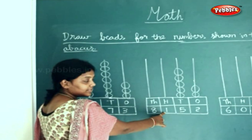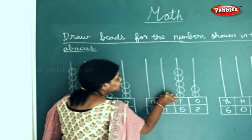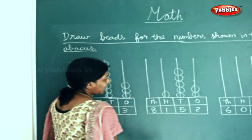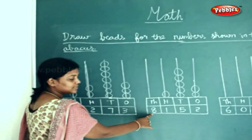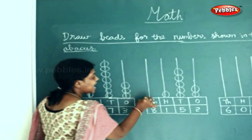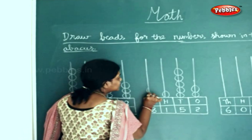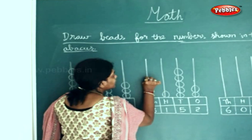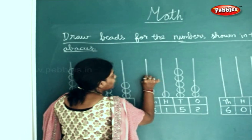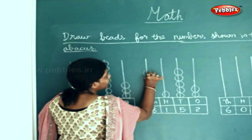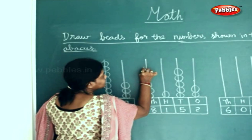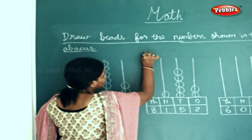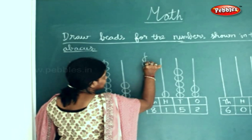How many beads in the 100s place? Just 1. How many in the 1000s place? 8 beads: 1, 2, 3, 4, 5, 6, 7, and 8.